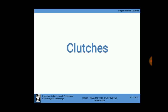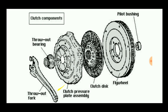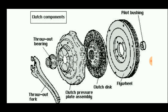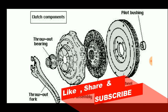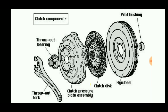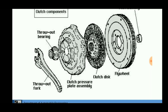Generally, clutches are used to engage and disengage the engine to the input shaft so that we can change the gears in the engine, allowing the vehicle to speed up at its most. The clutch consists of four basic components: the clutch disc, pressure plate, thrust bearing, and thrust fork.